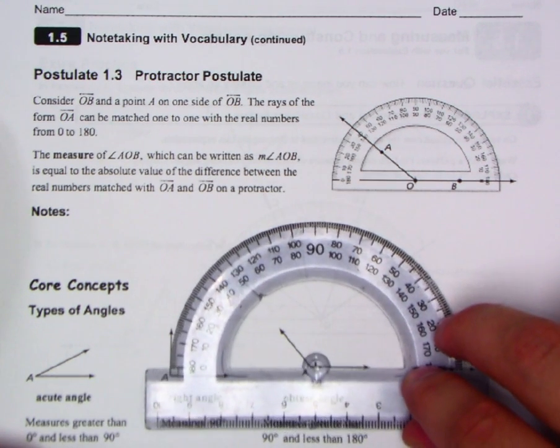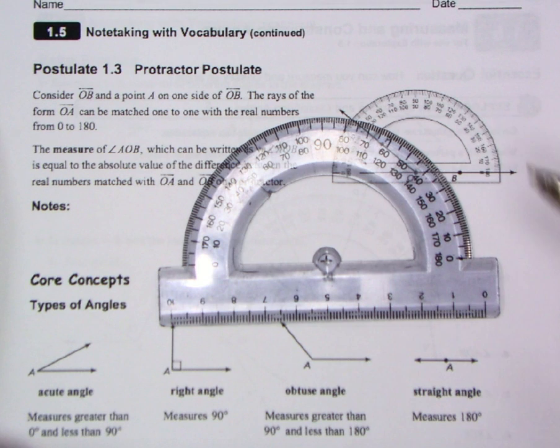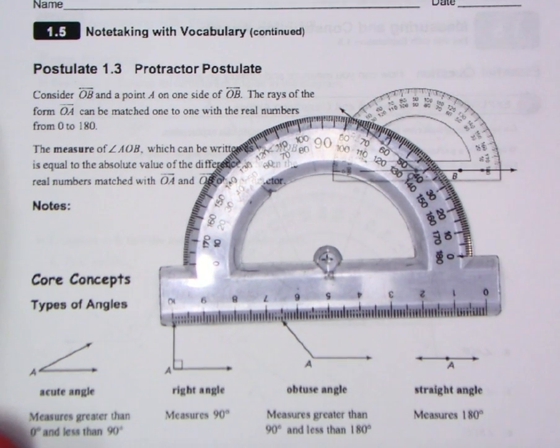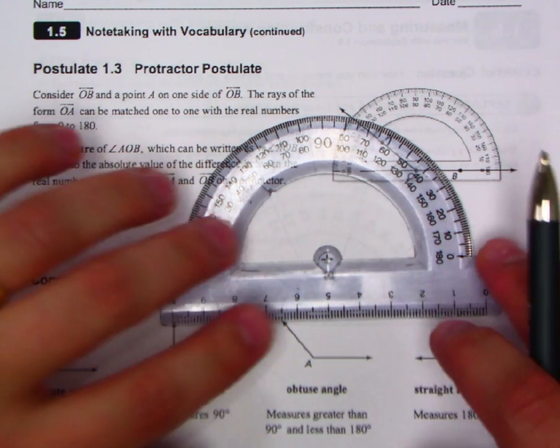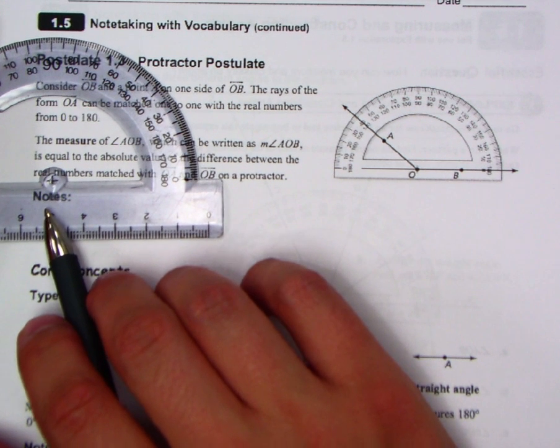This is what's known as a protractor. Now what a protractor allows us to do is efficiently measure the angle measures of any angle. And that's really assuming that we're stopping between zero and 180 degrees. You can have angles much larger than that, but in geometry our focus is really going to be 180 degrees and less at any single time.